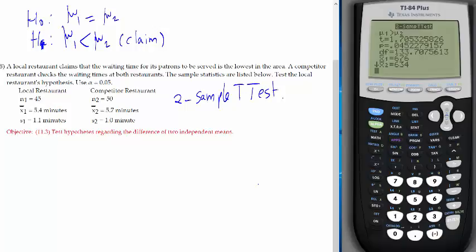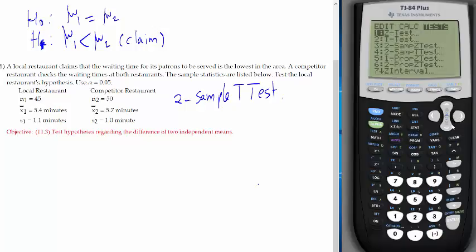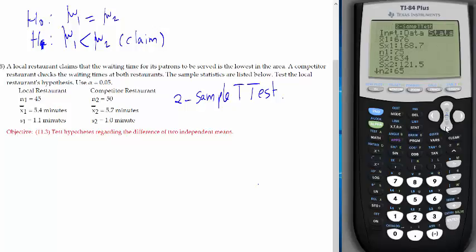Let me walk you through this again on the calculator. I'm gonna go to stat, tests, two-sample t-test, stats. Okay, x1 bar is 5.4. S1 is 1.1. Be very careful as you enter your data. N1 is 45.